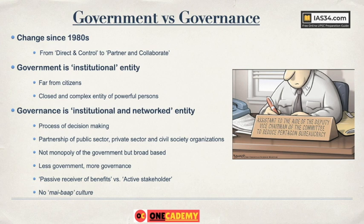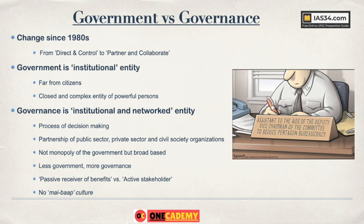Government means the elected and selected executive body, or the legislative body, or the judiciary body — these form the government. The three wings of government are executive, legislative, and judiciary. This government includes more people in the governance process. It also means less government and more governance. Less government means as a citizen you will feel less presence of government officials. You will not be highly dependent on them. Your service will come to you without running to their offices, without begging, without bribing. You get more service delivery with less interface with the actual powerful people in the government.